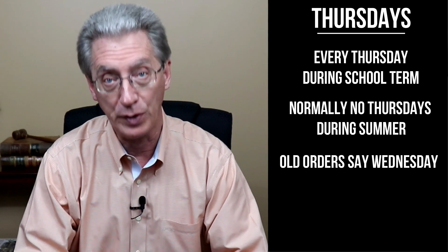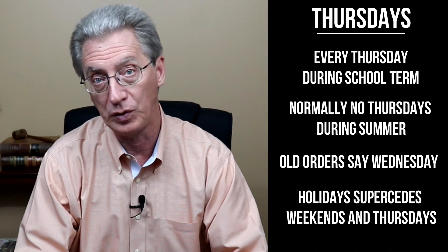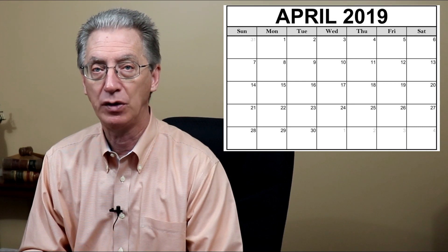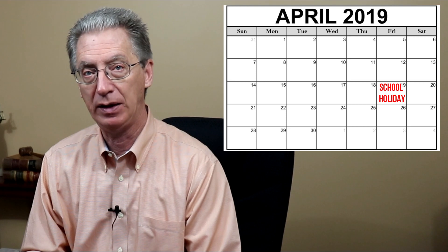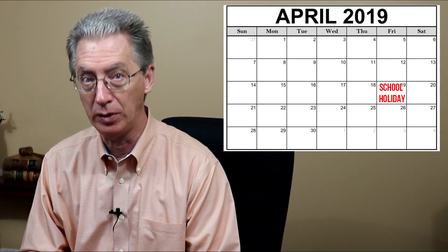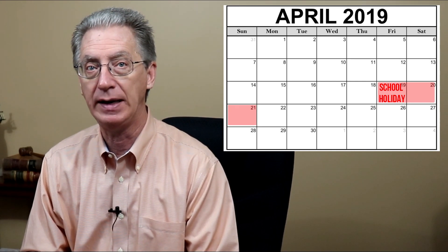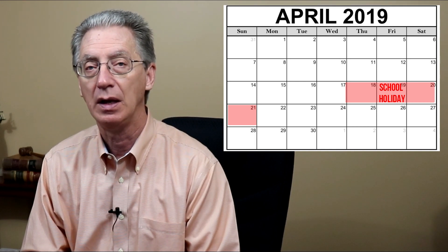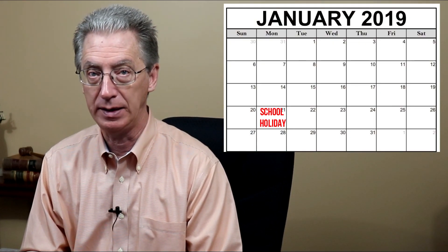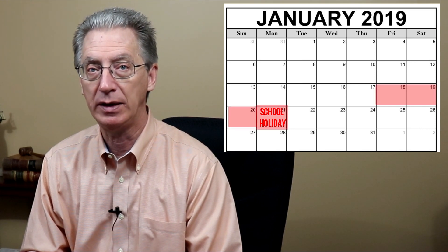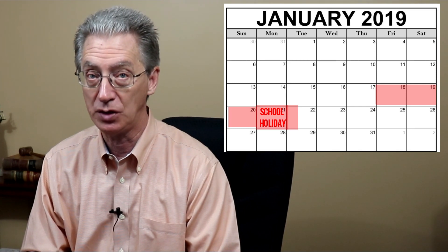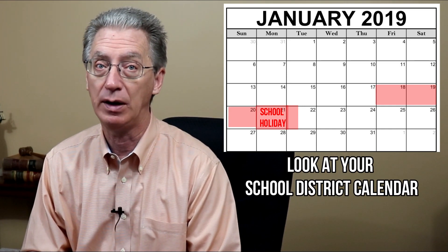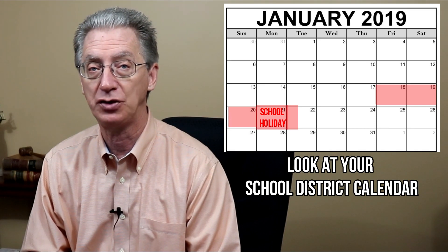If a holiday comes up like Thanksgiving, that supersedes the weekends and the Thursdays. If a weekend comes right before or after a Friday or Monday holiday, that expands the visitation. So if dad has Friday, Saturday, and Sunday and Friday is a school holiday, dad's visitation starts on Thursday evening instead of Friday evening. If a weekend is followed by a Monday holiday, visitation extends to Monday at 6 p.m. or Tuesday when school resumes. This also applies to national holidays during the summer.